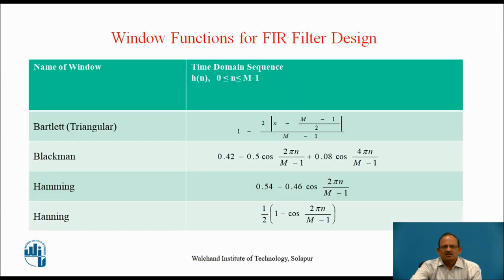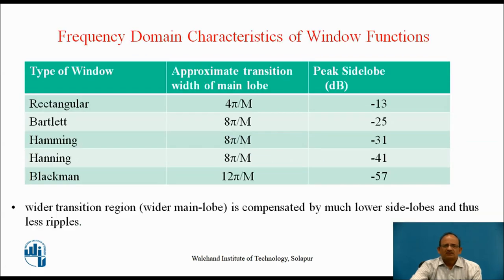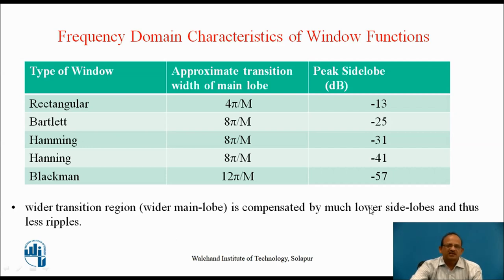These window functions are all defined for n = 0 to M−1, with equations for the Bartlett, Blackman, Hamming, and Hanning windows. The frequency domain characteristics show the approximate transition width and peak side lobes: rectangular window has transition width 4π/M; Bartlett, Hamming, and Hanning have 8π/M; Blackman has 12π/M. The rectangular window has the narrowest transition width but higher side lobes, while Blackman has lower side lobes, meaning less ripple in both passband and stopband.